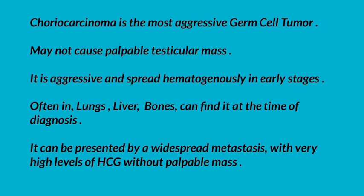Choriocarcinoma is the most aggressive germ cell tumor. It may not cause a palpable testicular mass. It is aggressive and spreads hematogenously in early stages — often to lungs, liver, and bones at the time of diagnosis. It can present with widespread metastasis and very high levels of HCG without a palpable mass in the testis.